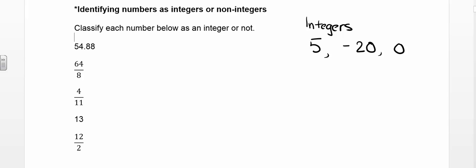So let's take a look at our first one. Here we have 54.88. Well, immediately you can see that there's a decimal point part to it. So this is not an integer.